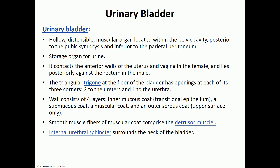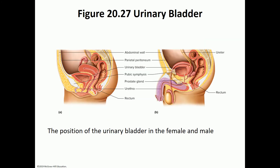The urinary bladder is there for storage of urine. It has four layers. In females, the uterus is directly related to the upper border of the urinary bladder. That is why during pregnancy, pregnant women tend to experience urgency — the increased need to empty their bladders — because of the pressure of the baby in the uterus.